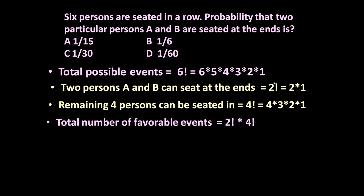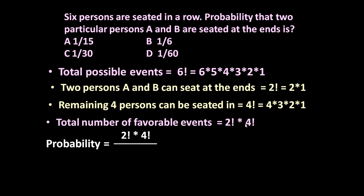Because A and B can sit in factorial 2 ways and the remaining 4 persons can be seated in factorial 4 ways, the total number of favorable events is factorial 2 × factorial 4. We know probability is given by total number of favorable events divided by total possible events, which is factorial 6.